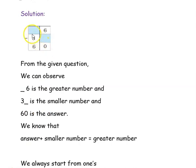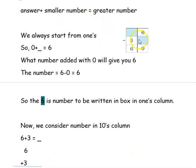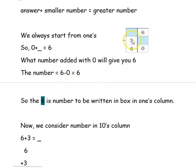The next example given is dash-6 minus 3-dash, and the answer is 60. From the given question, dash-6 is the greater number, 3-dash is the smaller number, and 60 is the answer. Using the formula answer plus smaller number equals greater number, we start from the ones column. The answer is 0 and the smaller number is dash, equal to the greater number 6. So 6 minus 0 is 6. So 6 is the number to be written in the ones column box.